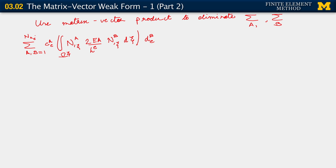This is the one we want to work with. Recognizing that the number of nodes in the element equals two, because we are working with linear basis functions — we indeed have two basis functions in each general element to represent both the weighting function and the trial solution. This lets us collect the C degrees of freedom into a row vector: c1e, c2e.